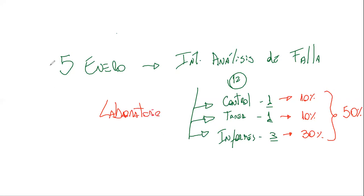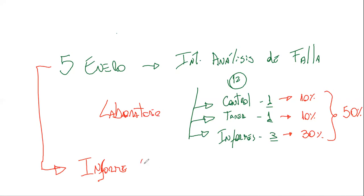Como el 5 de enero vamos a pasar esa materia, les voy a entregar un informe para que lo desarrollen, junto con la pauta de desarrollo, y este va a ser opcional. Si usted dice que ya está listo, con gusto no lo dé. Igual lo invito a que venga ese día a la clase, porque es un tema que le puede servir en su futuro profesional, pero el informe es opcional. El que opte por hacerlo tiene la posibilidad de cambiar una de estas cinco notas.